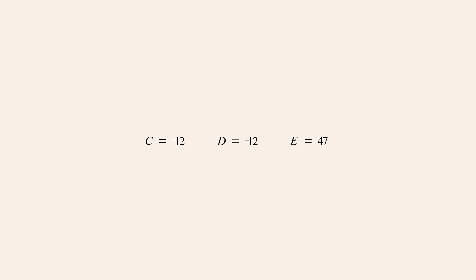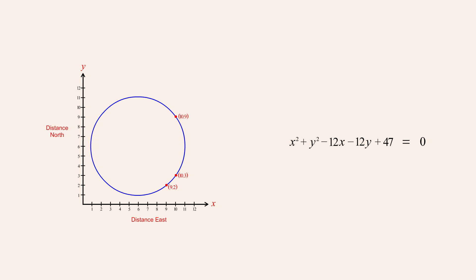Substituting these values for c, d, and e into the general equation for a circle and plotting the graph of this equation, we can see that this circle includes each of the three points. We also find that the center of this circle is located six units east and six units north of the origin, and that the radius of the circle is five units.